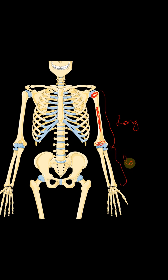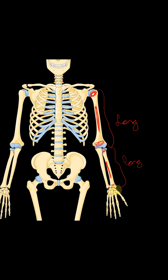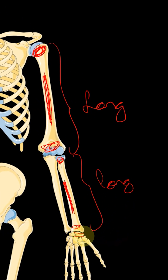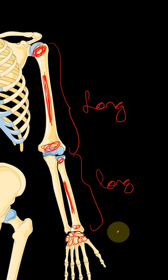Now what are short bones? Short bones are these carpal bones. They look like small cubes or cuboids. They don't have an upper and lower end.